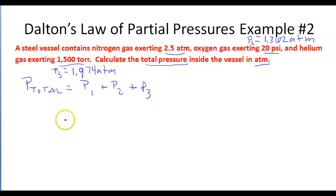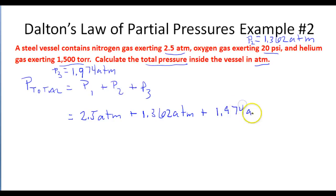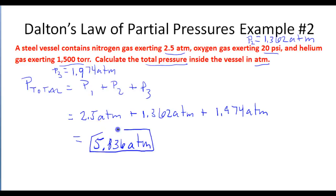Now that all the units are in atmospheres, we simply add them to get the total pressure: 2.5 atm plus 1.362 atm plus 1.974 atm. Taking 2.5 plus 1.362 plus 1.974, we end up with 5.836. So the total pressure in this container is 5.836 atmospheres.